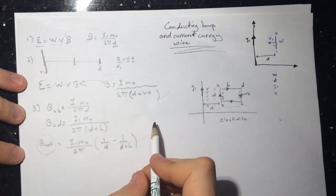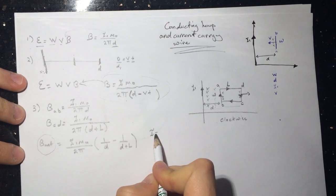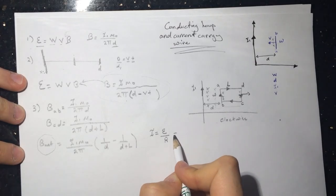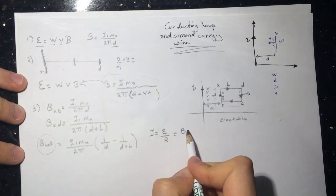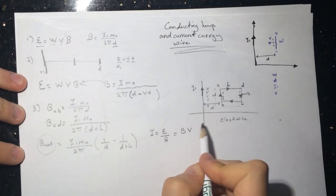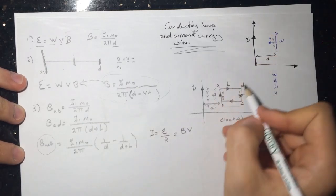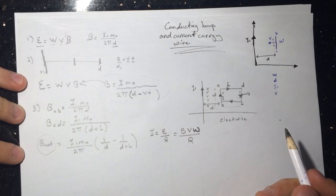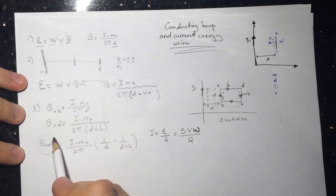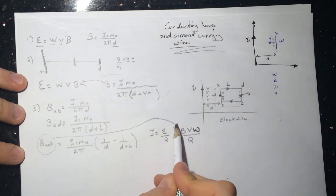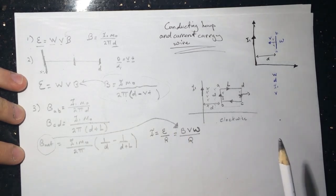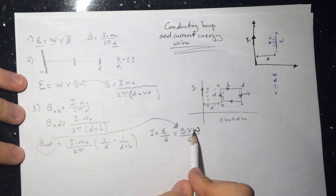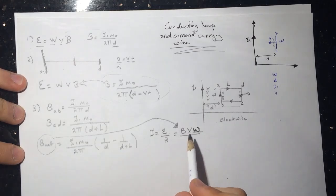The induced current I equals EMF over R, and the EMF is B_net times V times W, divided by R. Just substitute the B_net value in, and since we're given R, V, and W, you can solve for the induced current.